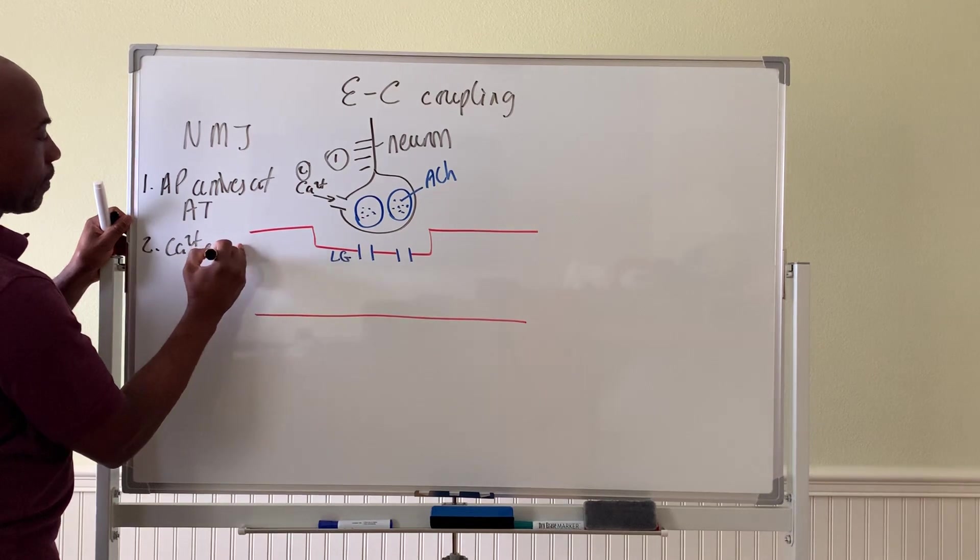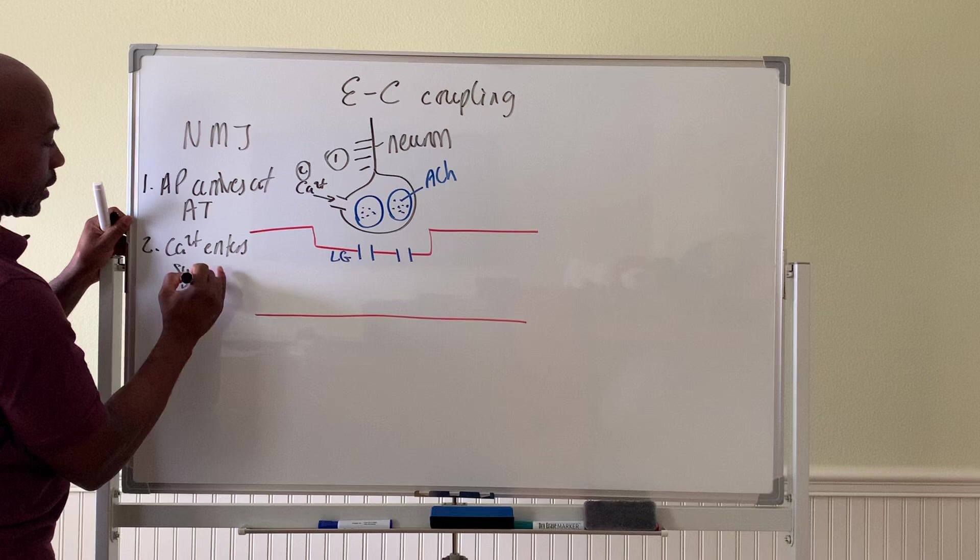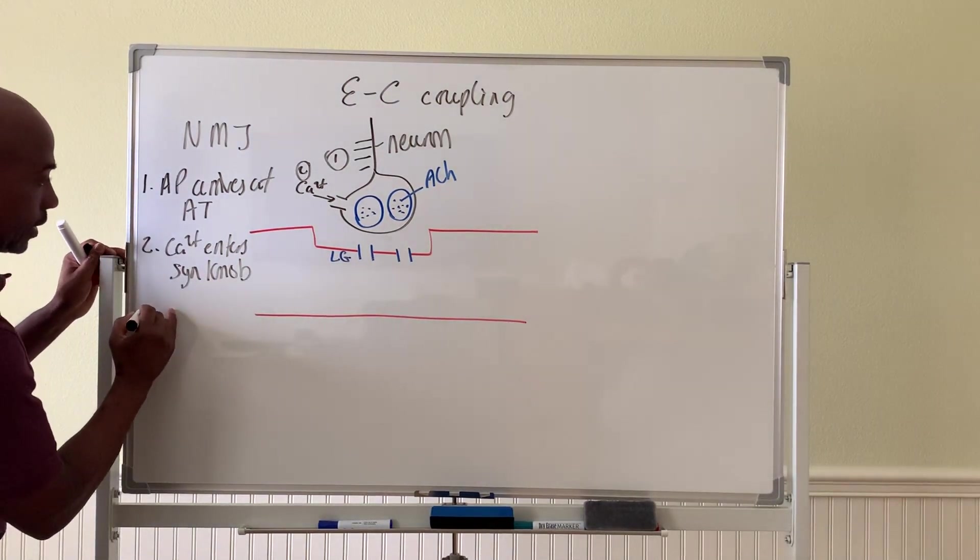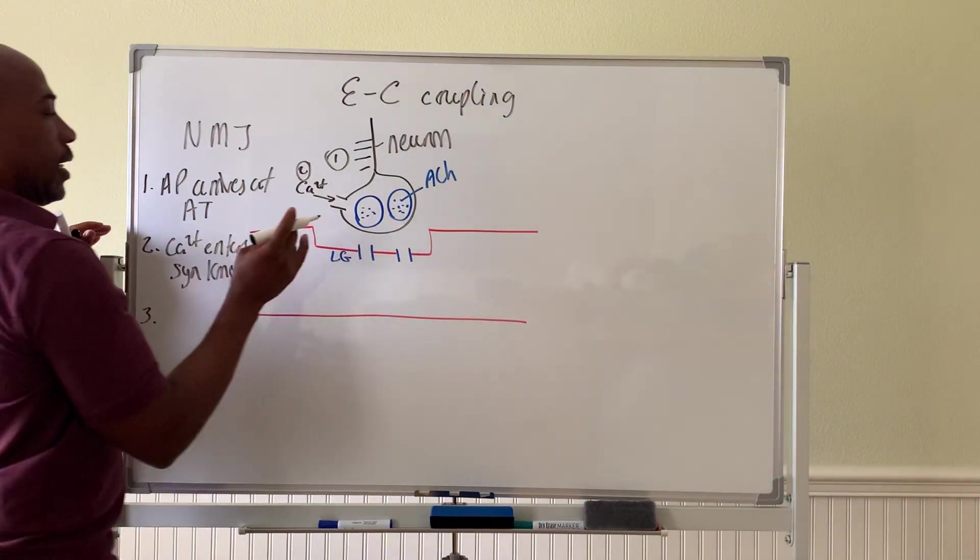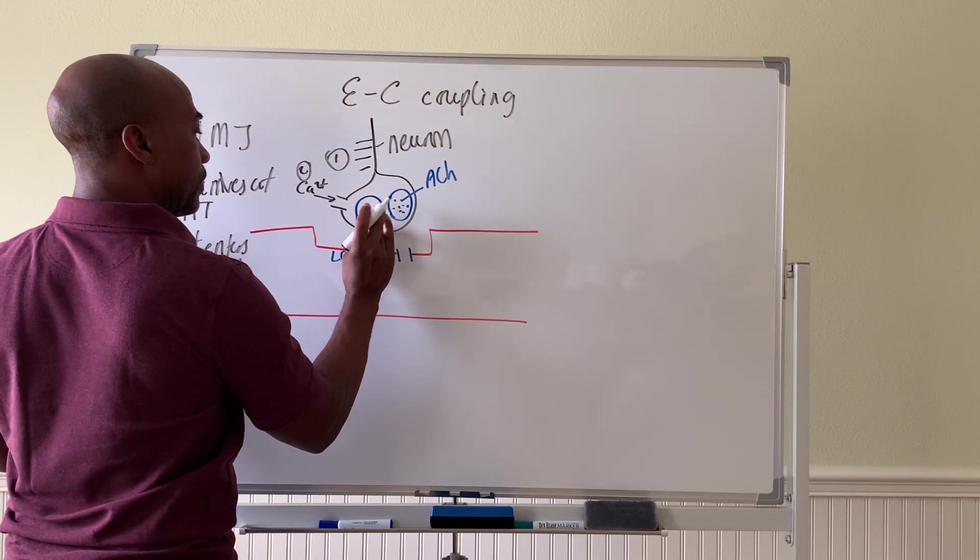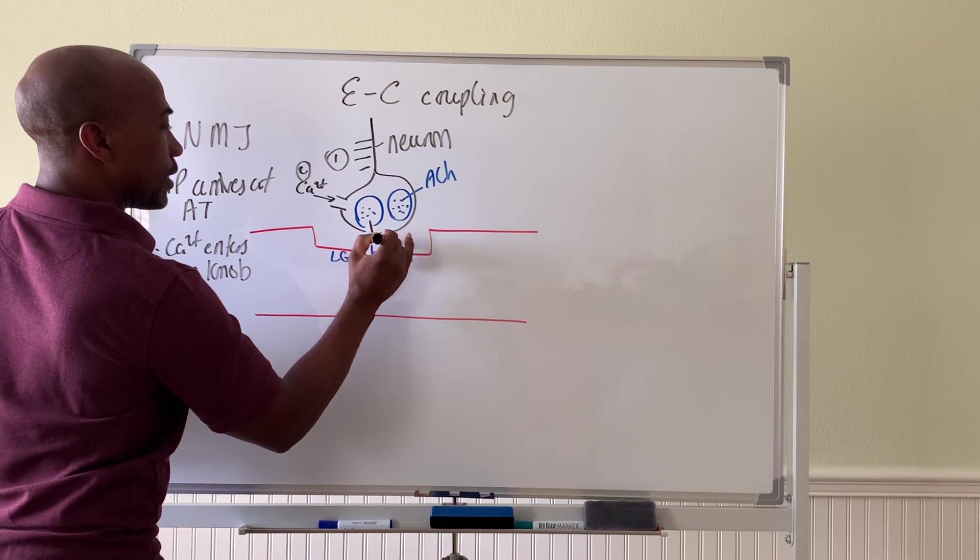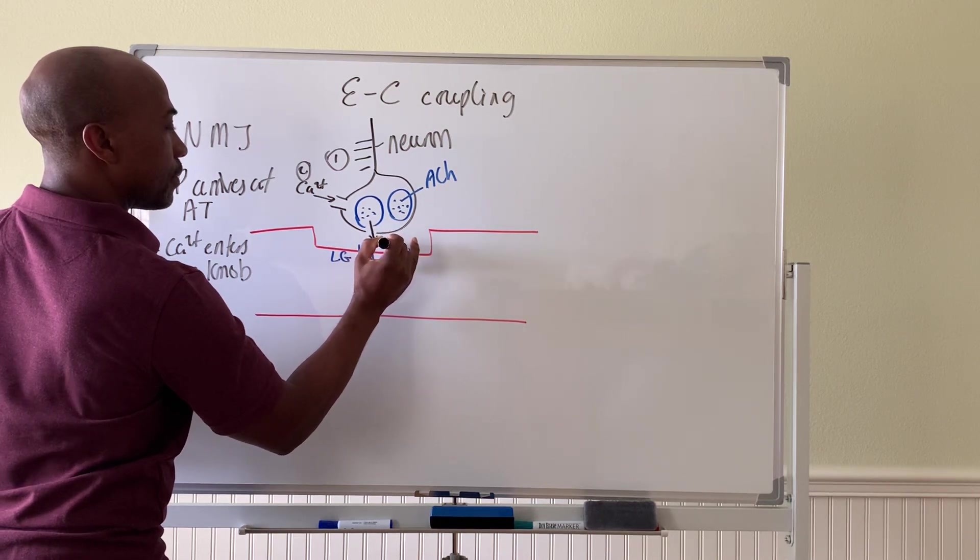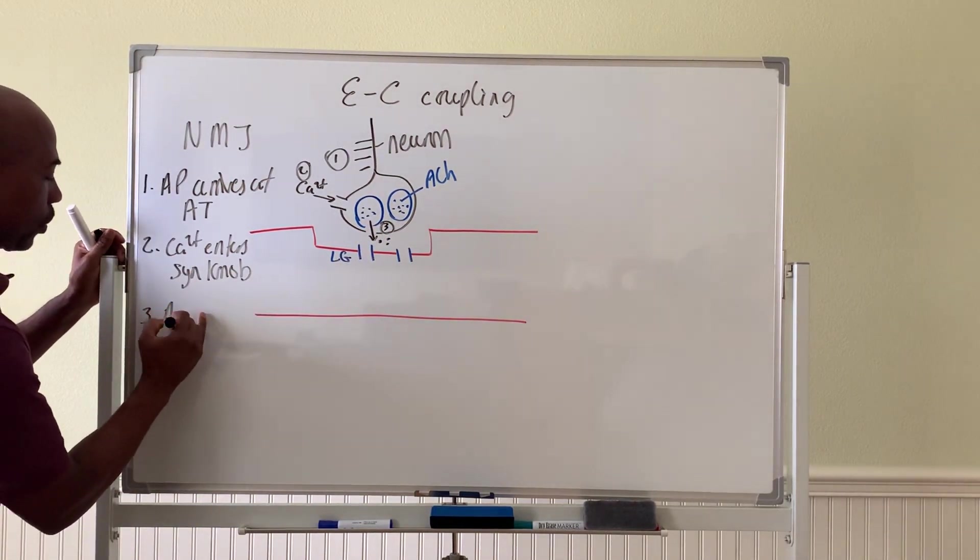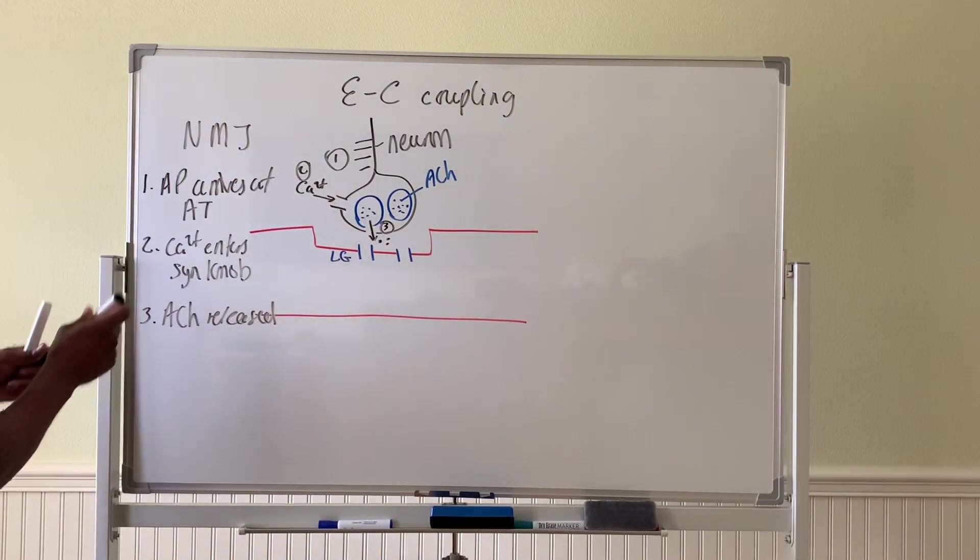Then step three, from here, is what will happen here is now the ACH will be released. Step three, ACH is released. Acetylcholine is released from the neuron.